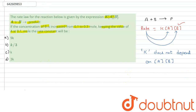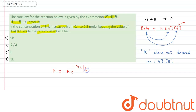The rate constant K is only and only dependent upon the temperature. According to the Arrhenius equation, K equals A times e to the power of minus Ea divided by RT, where Ea is the activation energy. So the rate constant is totally dependent upon the temperature.